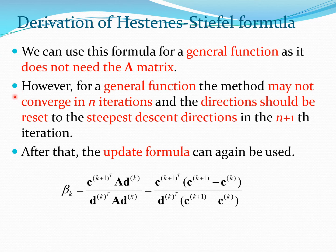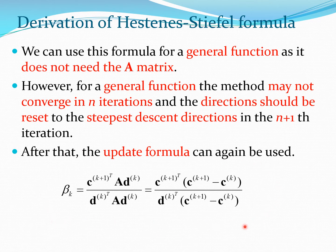However, if you use the Hestenes-Stiefel formula for a general function, you may not converge in n iterations, and therefore the search direction should be reset to the steepest descent direction after k = n+1 iterations. Both forms of the formula are essentially the same, with A*d_k replaced by (c_{k+1} - c_k). This is essentially the derivation of the Hestenes-Stiefel formula.